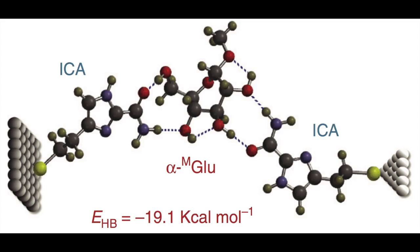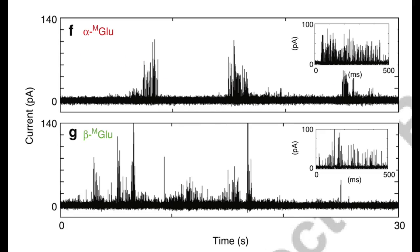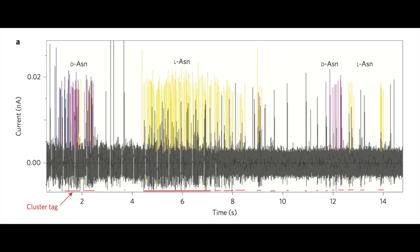In early experiments, researchers placed common molecules in between electrode plates and trained machine learning models on their current spikes. So far, the trained models have distinguished individual amino acids, nucleobases, peptides, and sugars.